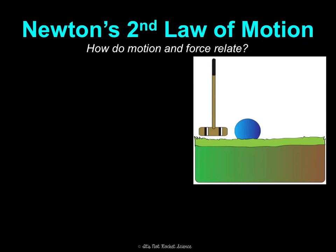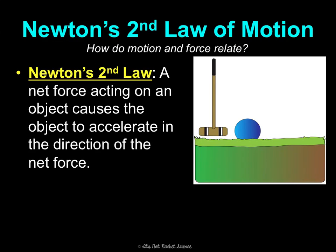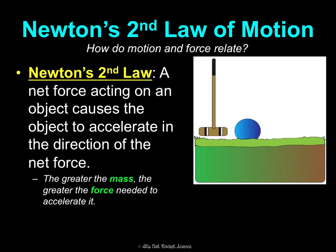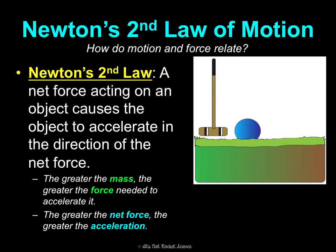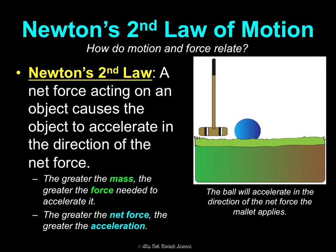Newton's second law of motion says a net force acting on an object causes the object to accelerate in the direction of the net force. The greater the mass, the greater the force needed to accelerate it — it's much easier to apply a force to accelerate a tennis ball than a bowling ball because the tennis ball is far less massive. Also, at constant mass, the greater the net force, the greater the acceleration. So two tennis balls thrown with different forces will have different accelerations.